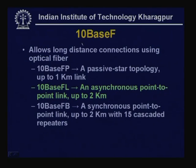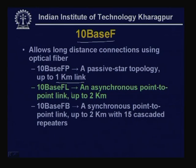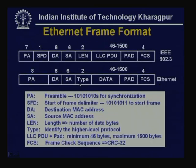10BaseF uses optical fiber, particularly when distances are longer. There are three alternatives: 10BaseFP uses a passive star topology allowing 1-kilometer links; 10BaseFL, the most popular, is an asynchronous point-to-point link giving up to 2 kilometers; and 10BaseFB is a synchronous point-to-point link also up to 2 kilometers, with up to 15 cascaded repeaters. These are the various alternatives of Ethernet or IEEE 802.3.